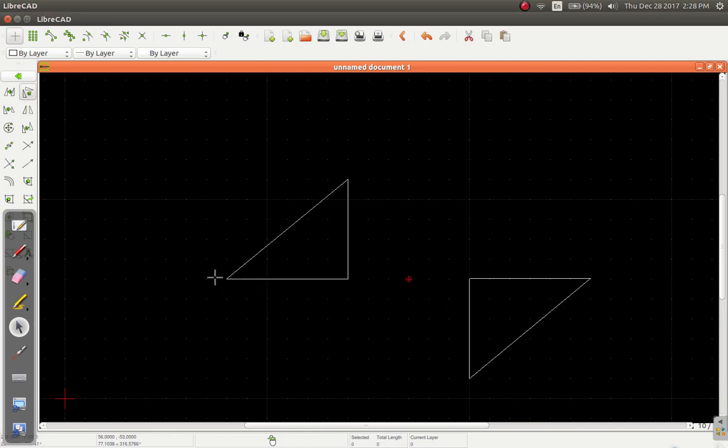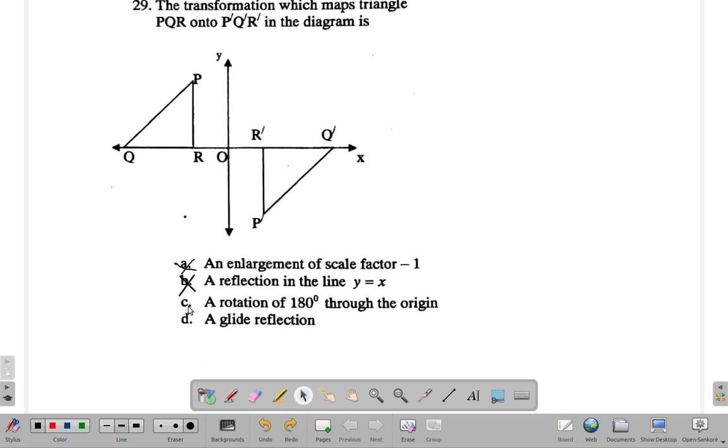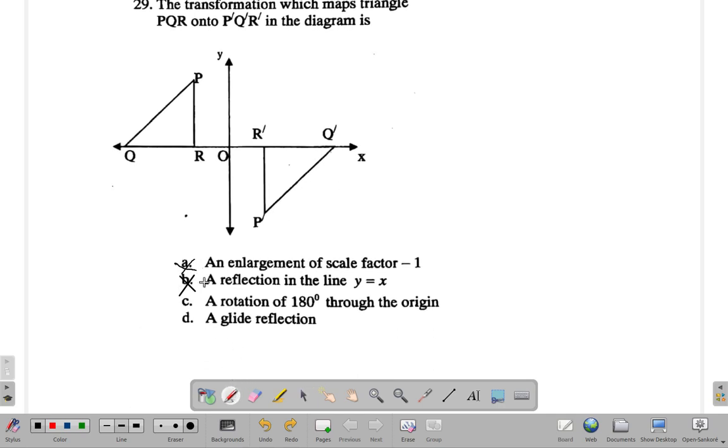Now, this point pointing to the left would be pointing to the right, and the part that goes up is pointing down. Let's look back at this. Pointing to the left points to the right. P is up, now P is down. So based on that, you can see that it is a rotation 180 degrees through the origin.